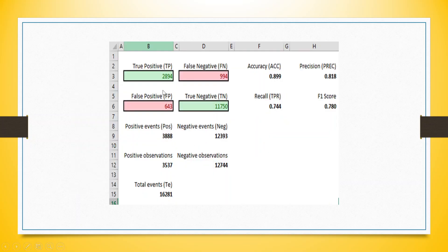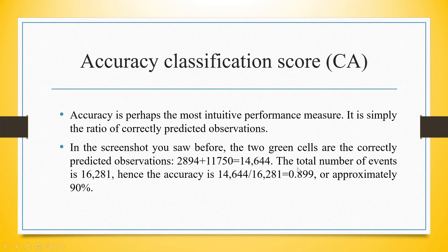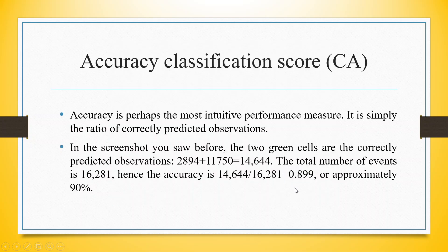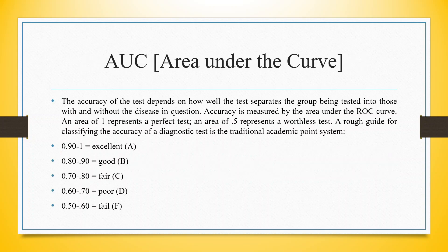Let's take a very small example. We are having true positive 2894 and true negative 11750. The false positive is 643 and false negative is 994. Our classification accuracy is the summation of the green cells — 2894 plus 11750 — divided by 16281, the total number of observations. So it is 0.899, meaning our classification accuracy is approximately 90%.